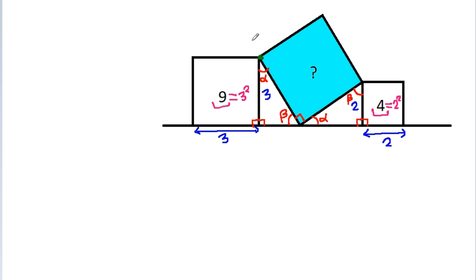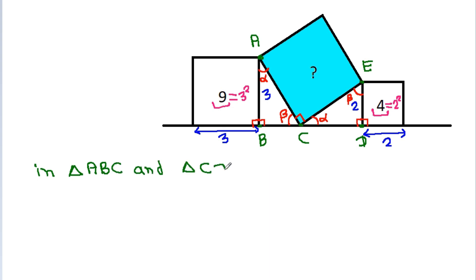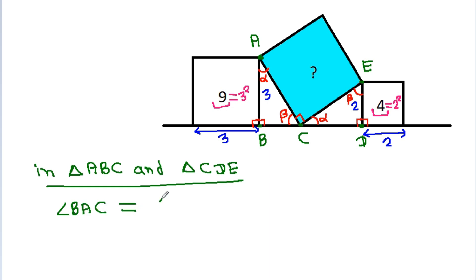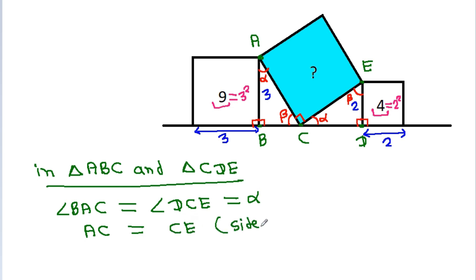Suppose this point is A, this point is B, this point is C, this point is D, and this point is E. Then in triangle ABC and triangle CDE, angle BAC equals angle DCE, which is beta. And AC is equal to CE — that is the side of the square.